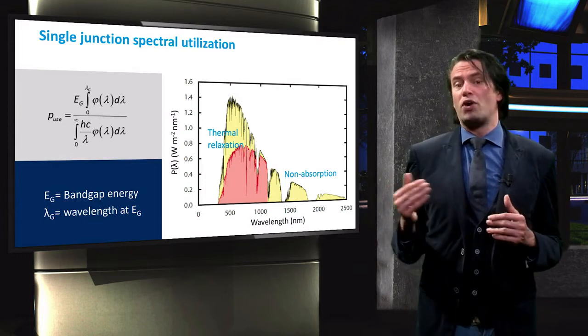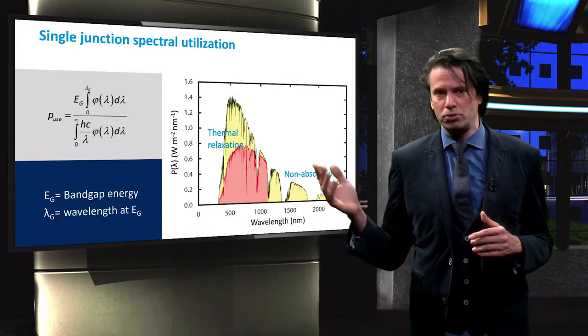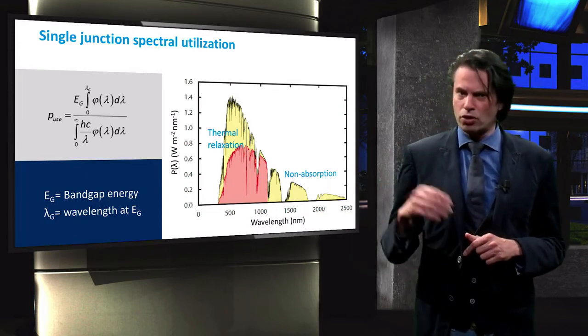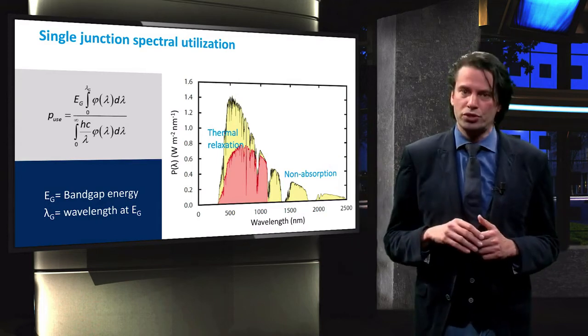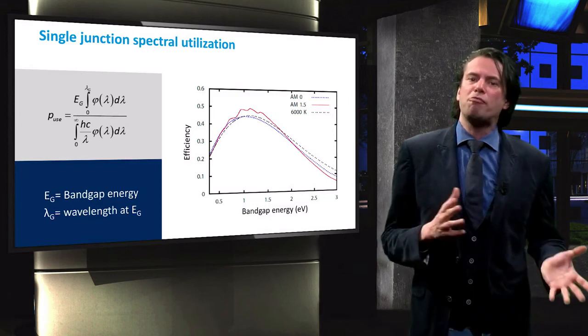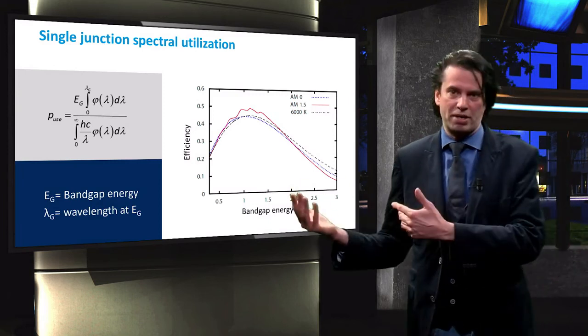Much of the energy in the short wavelength range in reference to the band gap energy is lost due to thermalization. In the long wavelength spectrum, the losses are caused by non-absorption. This figure visualizes the trade-off between using an absorber layer with a large or small band gap energy.